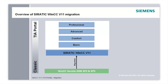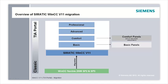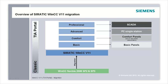Depending on the selected version, different operator panels can be configured, where a higher version always also contains the operator panels of the lower version. The respective version is enabled via the used license. WinCC flexible 2008 Service Pack 2 is required as the starting point for a migration. With this version, projects can be migrated to WinCC version 11 into the respective target system. The individual requirements are discussed in greater detail in the further course of the webcast.